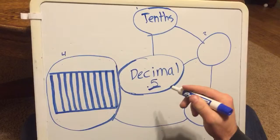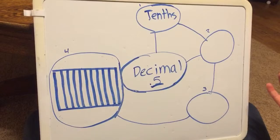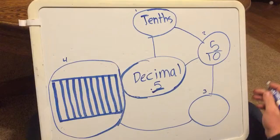Understanding that the 5 is in the tenths place helps me write 0.5 as a fraction. So I would write 5 over 10.